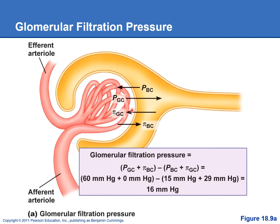When we add up these opposing forces, because the blood pressure is so high in the glomerulus, filtration wins and we have a net pressure of 16 mmHg left over. That high glomerular blood pressure drives filtration, pushing plasma out into Bowman's capsule to make the filtrate, which then starts down the proximal convoluted tubule.